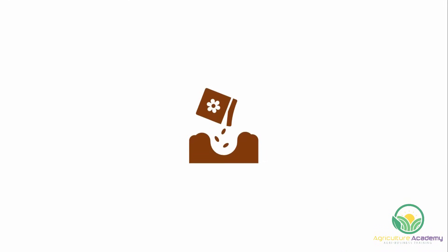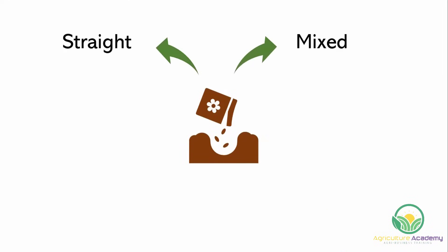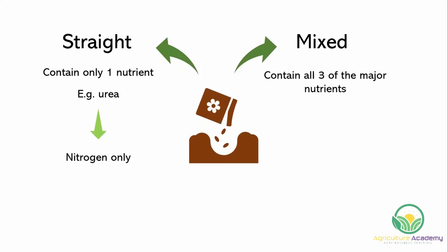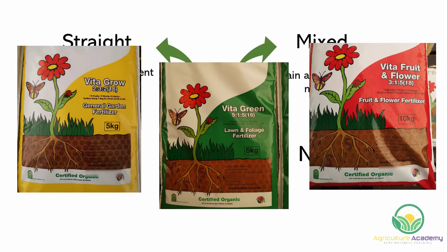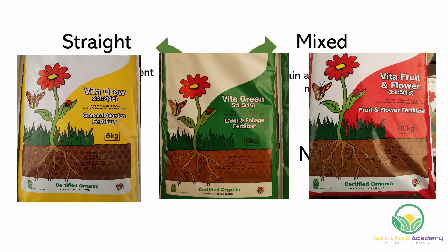Based on the nutrients they contain, fertilizers can be classified as either straight or mixed. Straight fertilizers will contain only one nutrient, such as urea, which provides the plants with nitrogen only. Complete fertilizers contain all three major nutrients: nitrogen, phosphorus and potassium. Complete fertilizers are commonly available in dry formulations in bags like this.